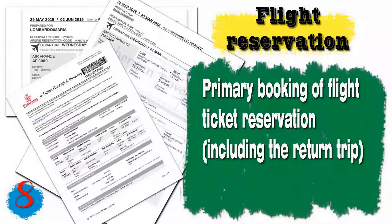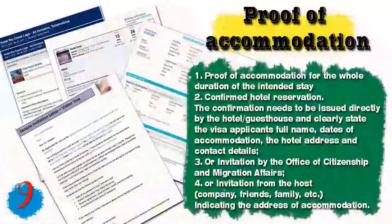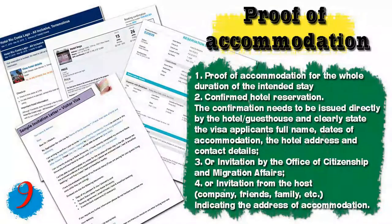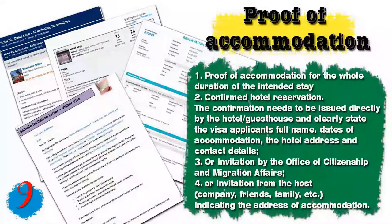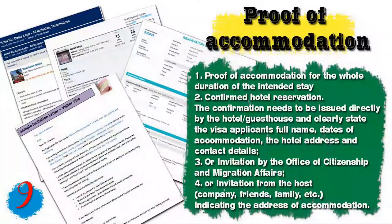Please note that cash will not be accepted as proof of funds. If you don't have a bank account, proof of any assets can also be presented. Number eight: you will need a flight reservation — a primary booking of a flight ticket including the return trip must be presented. For some countries the ticket must be confirmed. Number nine: you will need proof of accommodation for the whole duration of your intended stay — a confirmed hotel reservation clearly stating your full name, dates, hotel address, and contact details.